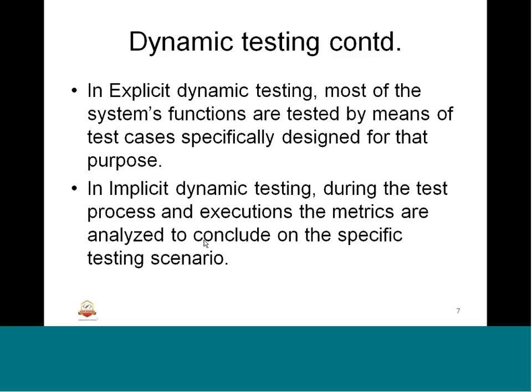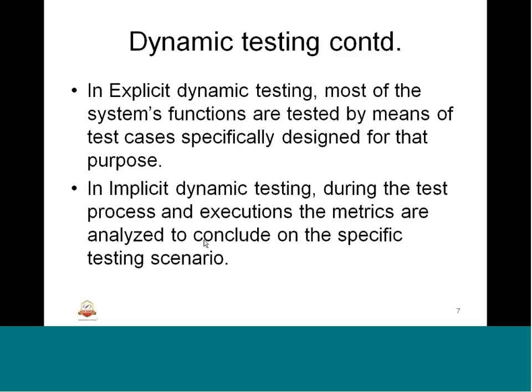Another example is security, which can be tested statically by reviewing security regulations — how security aspects are implemented and how the system behaves — all tested implicitly. That is about implicit dynamic testing.